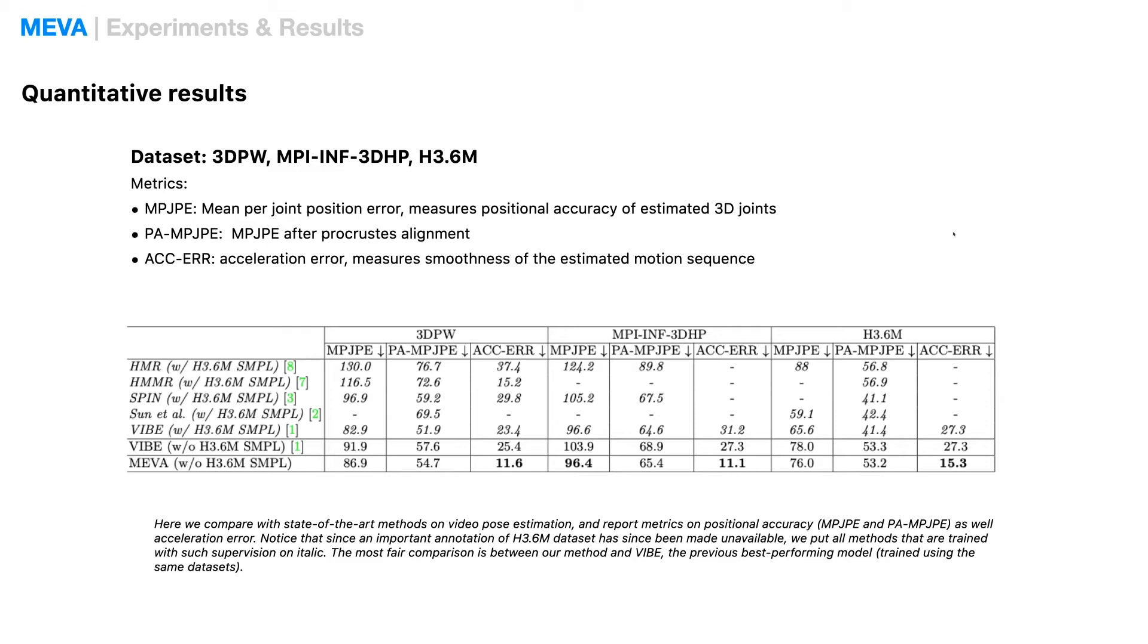The metrics we use here are the popular MPJPE and PA-MPJPE, mean per joint positional error, which measures the positional accuracy of the estimated 3D joints in millimeters.